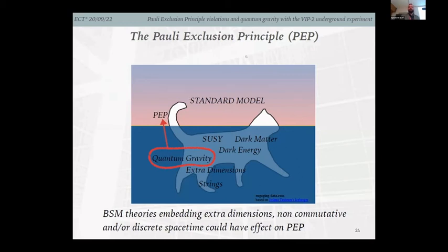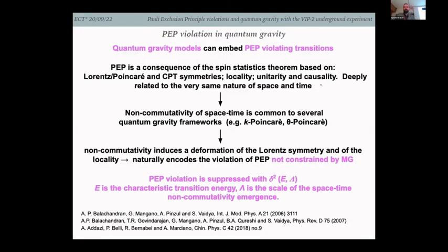Going back to the iceberg picture: we have now managed to connect the Pauli Exclusion Principle with quantum gravity. Quantum gravity models can embed PEP violation. Since the spin-statistics theorem rests on a few generic assumptions deeply related to the structure of space and time, non-commutativity — common in quantum gravity, such as the kappa-theta Poincaré — induces PEP violation without concern for the Messiah-Greenberg superselection rule.